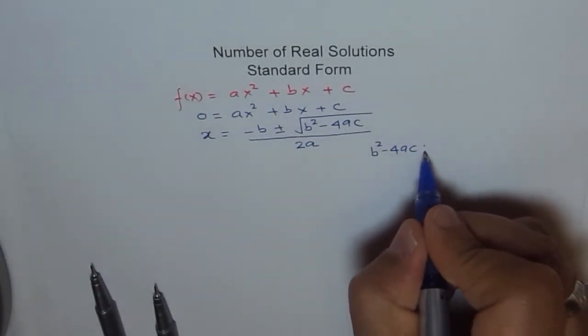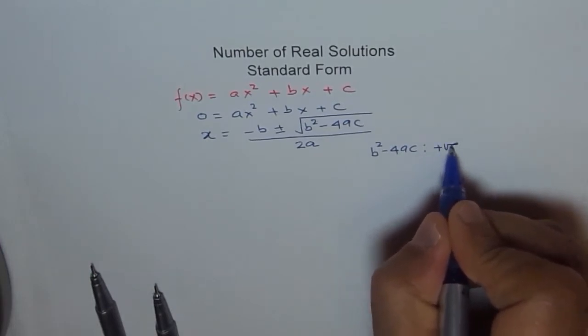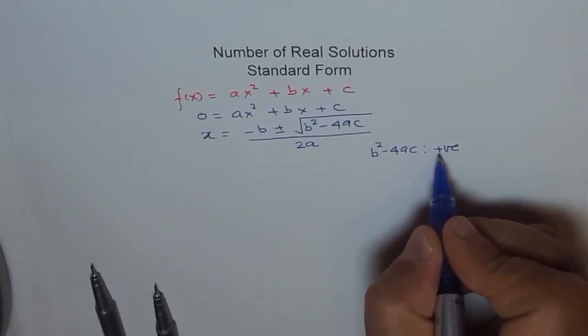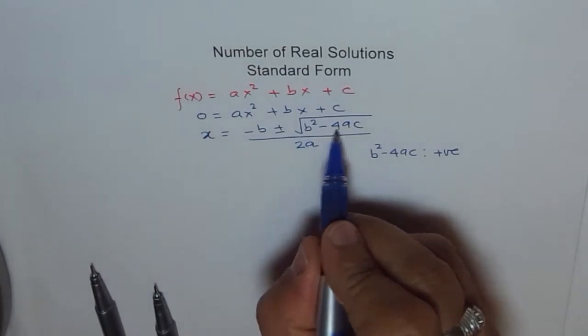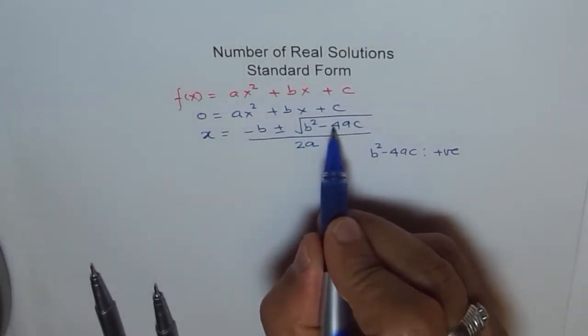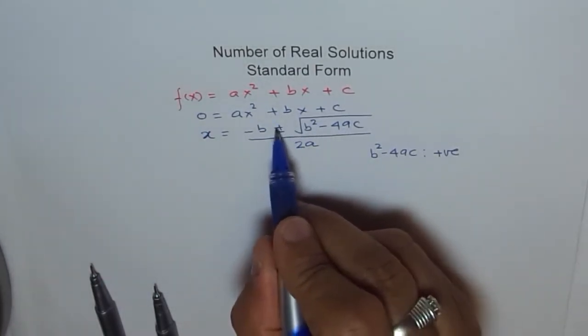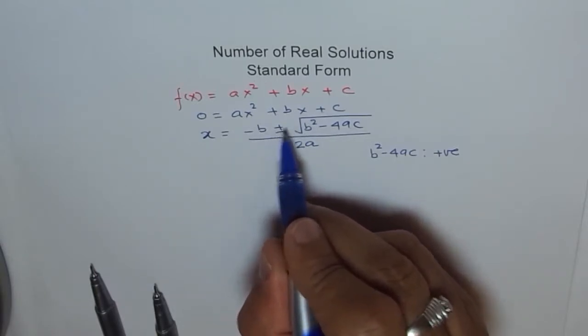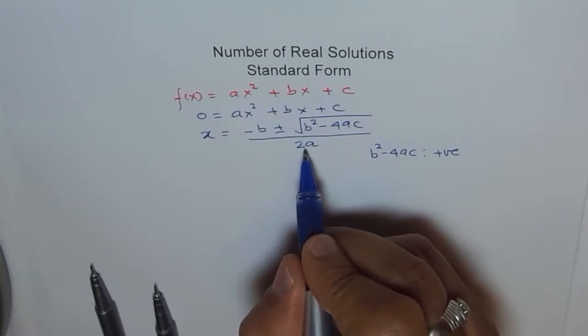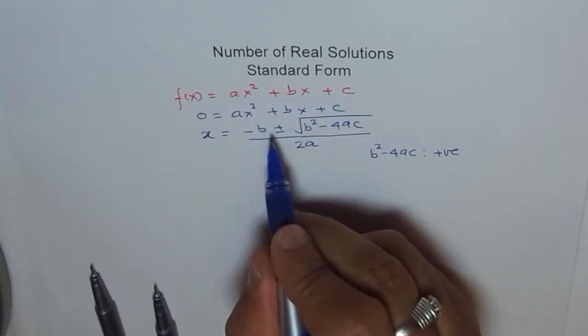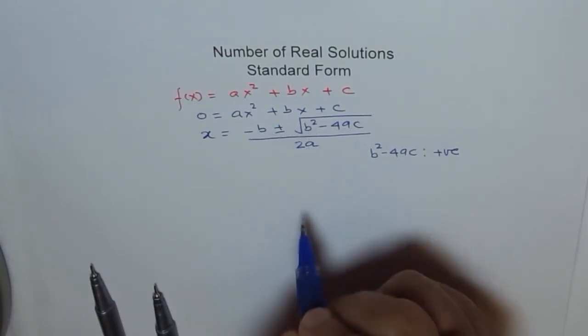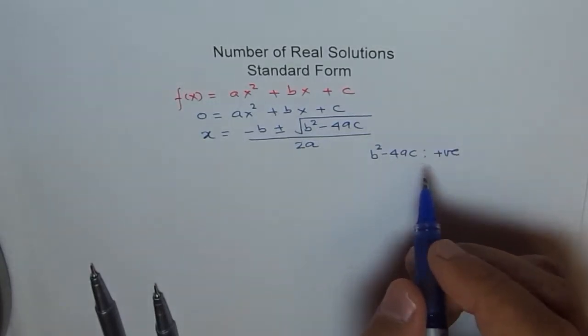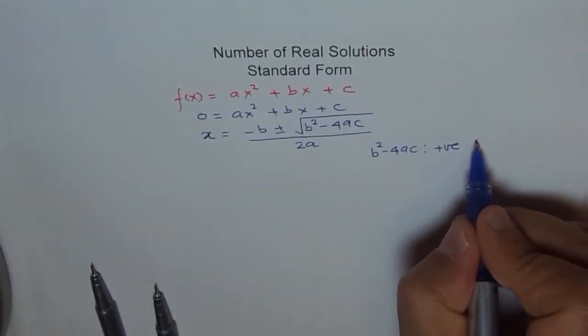Let's say b square minus 4ac is positive. If b square minus 4ac is positive, then this radical will be positive and we will have two values, plus and minus. So we will have two solutions. One will be minus b plus that radical divided by 2a. Second will be minus b minus that radical divided by 2a. So that leads to two solutions.